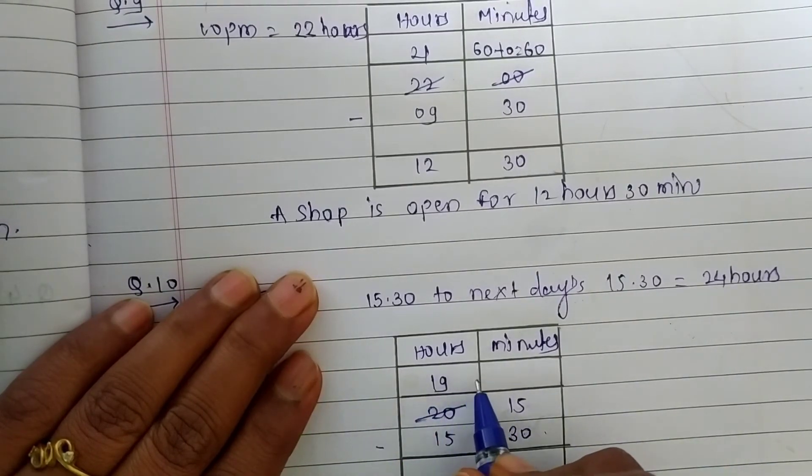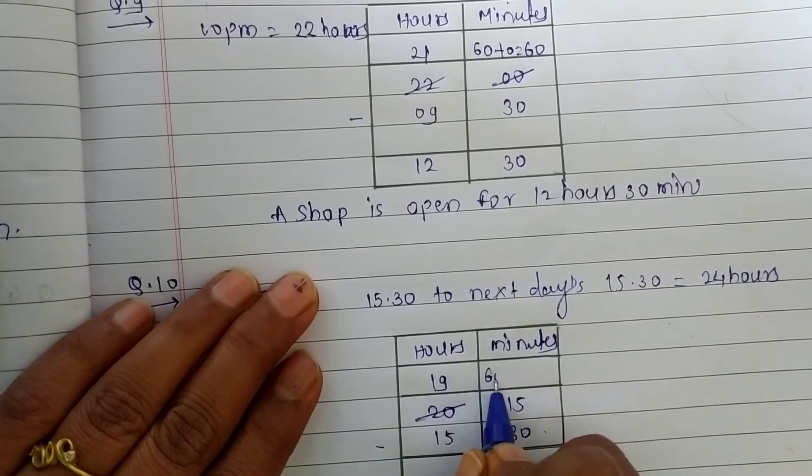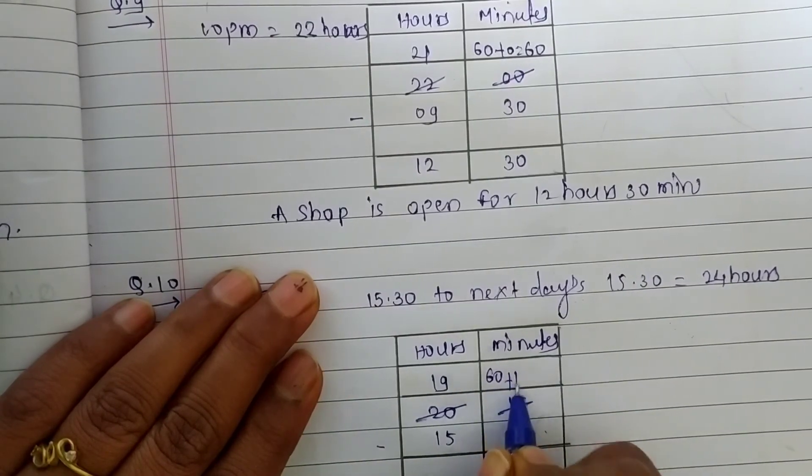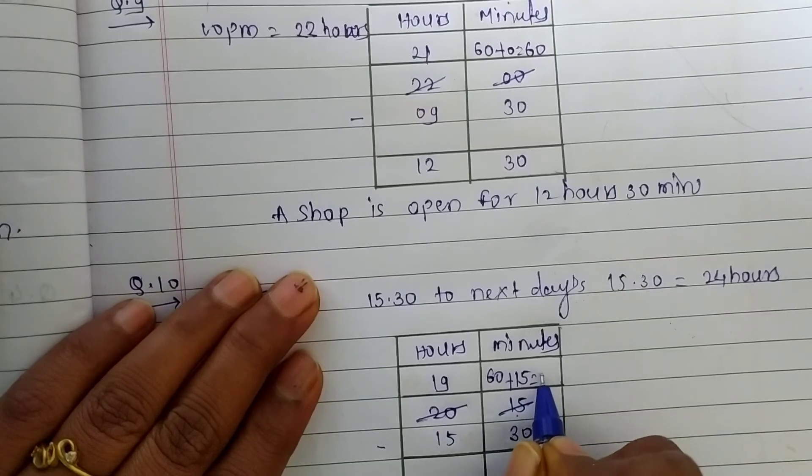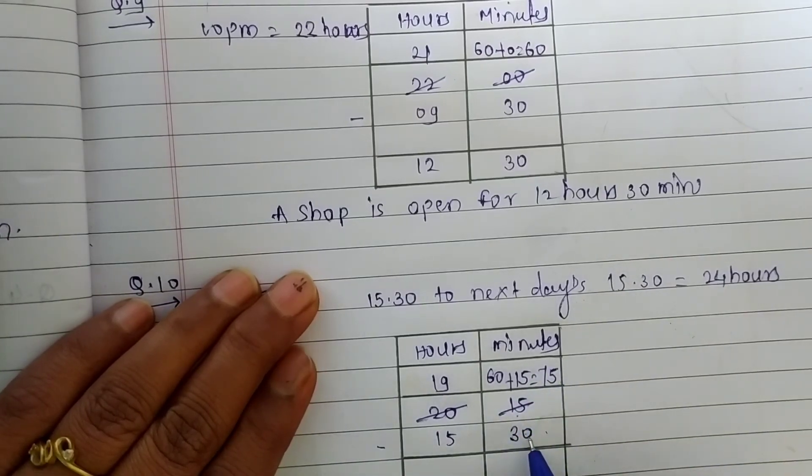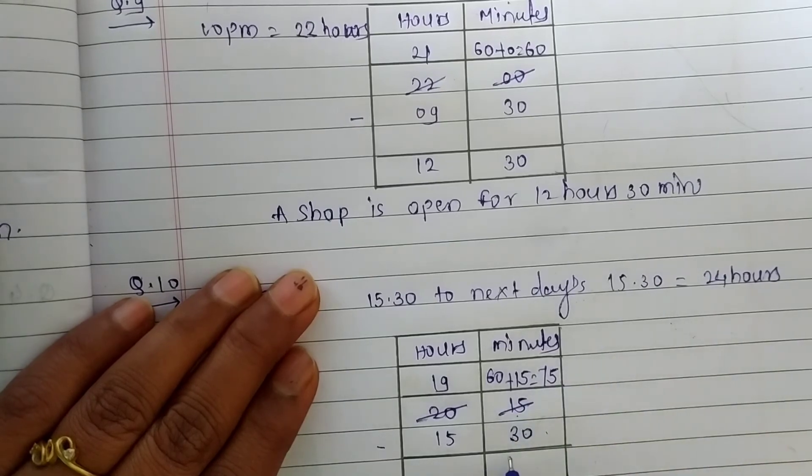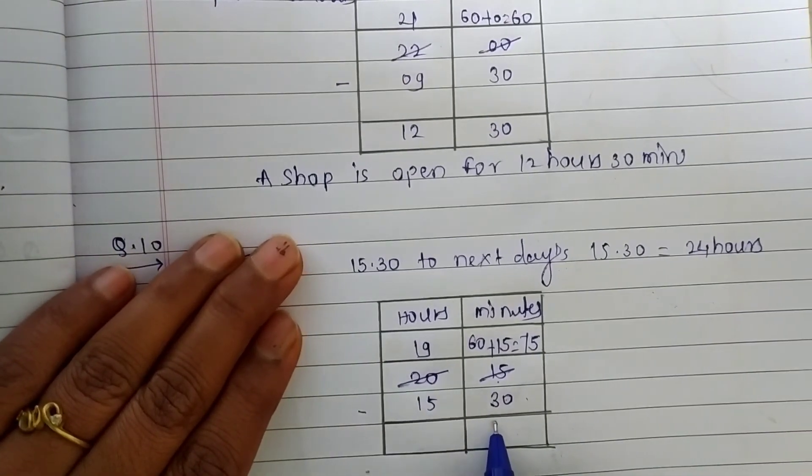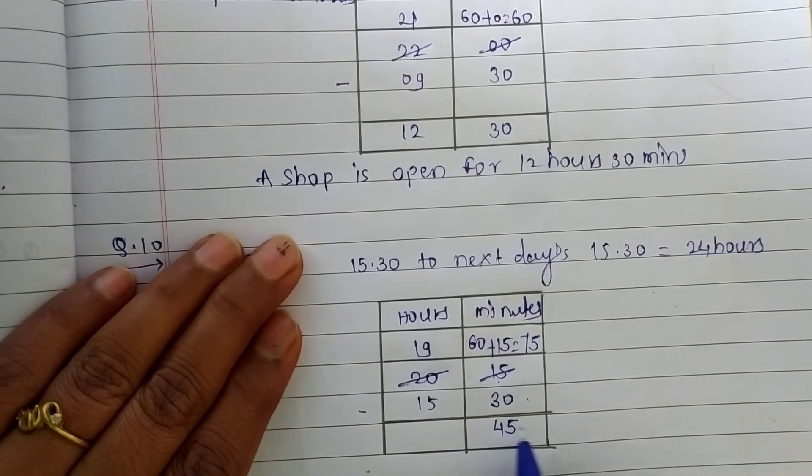Taken, borrowed 1 hour. It will be 60 plus 15. Now, we have total minutes 75. Subtract now 30 from 75. The answer is 45 here.